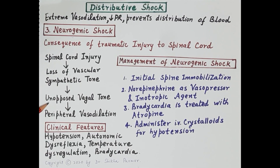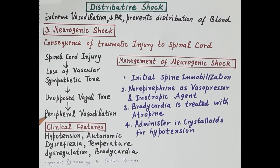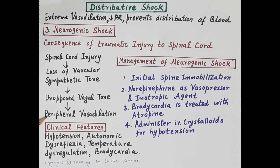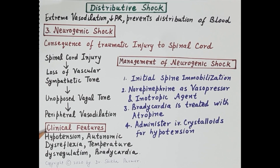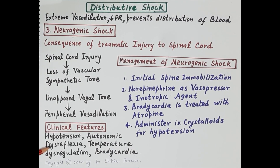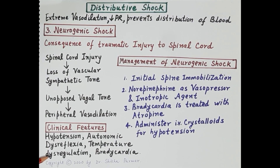Unopposed parasympathetic tone causes excessive peripheral vasodilation, leading to hypotension — fall in blood pressure — poor tissue perfusion, ischemia, necrosis, organ failure, and if untreated, death. Clinical features include hypotension from vasodilation, autonomic dysreflexia due to uncoordinated autonomic responses, temperature dysregulation, and bradycardia caused by excessive vagal tone.